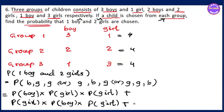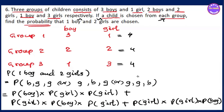Plus P(first girl) × P(second boy) × P(third girl). The probability of the event equals P(boy) × P(girl): first girl times boy, first girl times boy. Two, three, four into second girl, second girl times girl, first girl times girl.